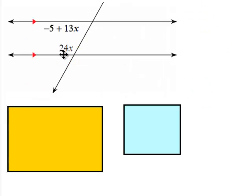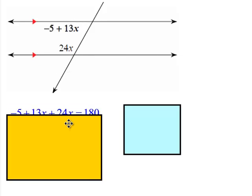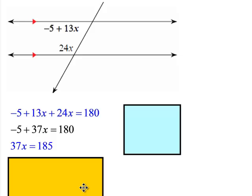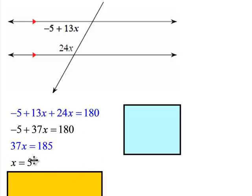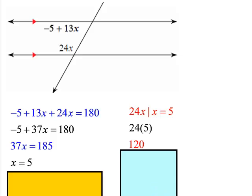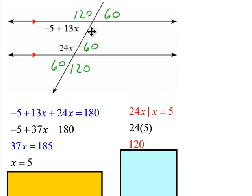These are same-side interior angles with parallel lines and a transversal — that means they're supplementary. So you add them together and set them equal to 180, then do the algebra. You find out that x equals 5. Substitute that into the 24x expression and you get 120 degrees. If this is 120 degrees, then that's 120; and this would have to be 60 because it's a linear pair. So 60, 60, and there's your 120.